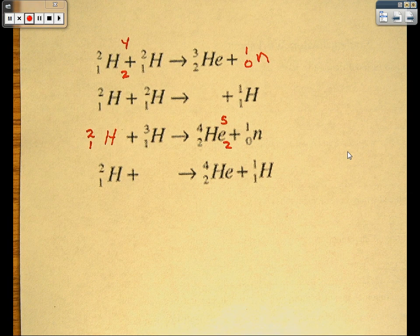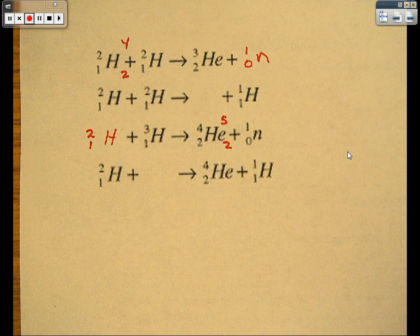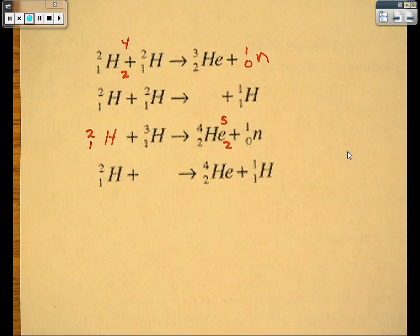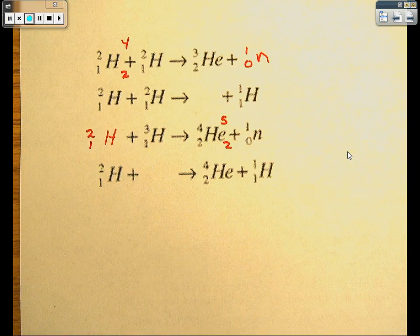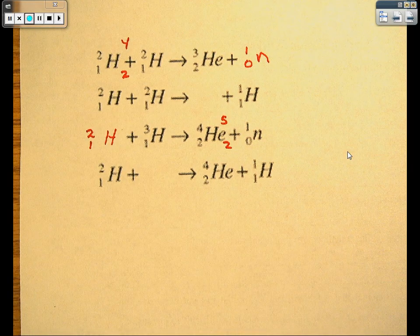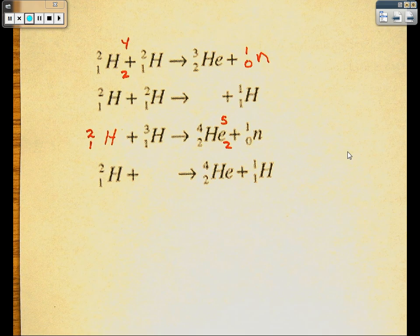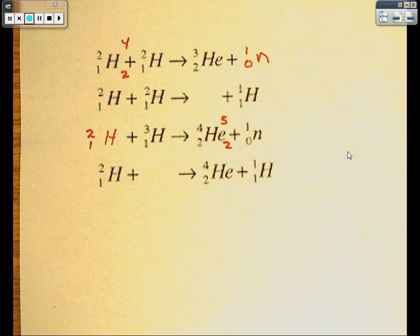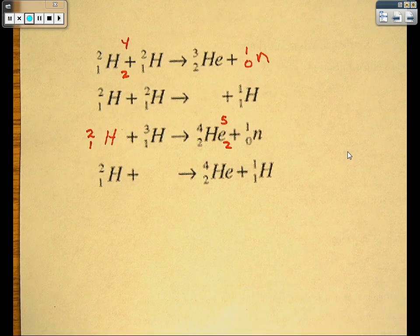So again, same principle. The sum of the mass on one side has to equal the sum on the other. The sum of the atomic number on one side has to equal the sum on the other. Add up your complete side first. Whichever one you're not missing anything on. Add that side up first. And then subtract out what you have on the other side to find your missing parts.